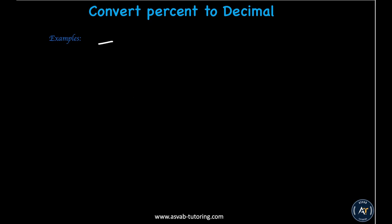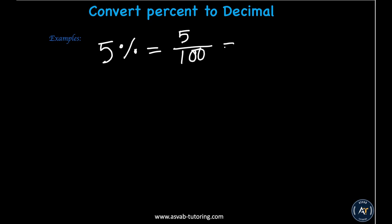Say I have a problem like 5%. How do I make this 5% into a decimal? Before we convert percent to decimal, let's talk about what percent means. Percent is actually per 100, meaning 5% means 5 out of 100. So I could write that as 5 over 100, which gives you 0.05 as a decimal.